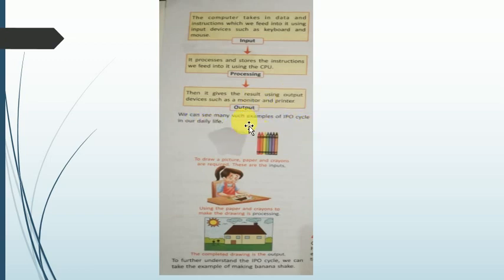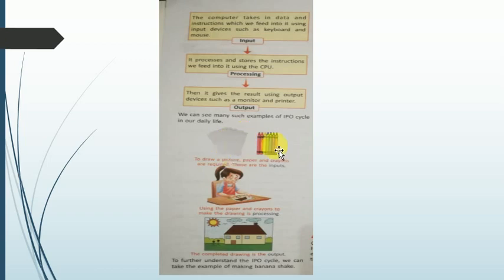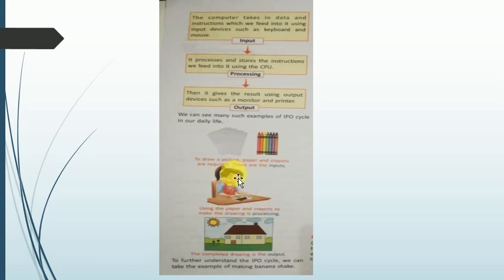We see many examples of the IPO cycle in daily life. To draw a picture, paper and crayons are required — these are the inputs. What you do using the paper and crayons to make the drawing is processing. Finally, the completed drawing is the output.